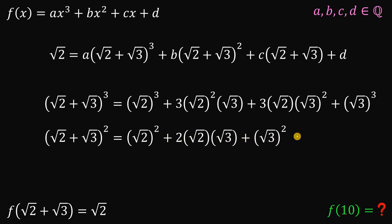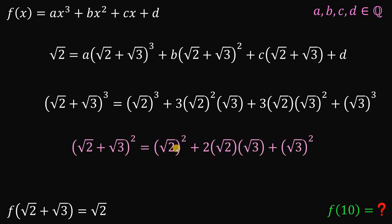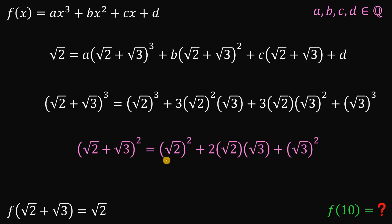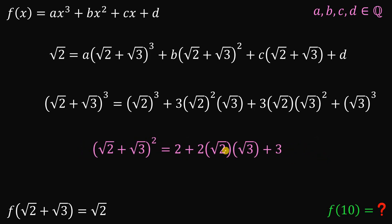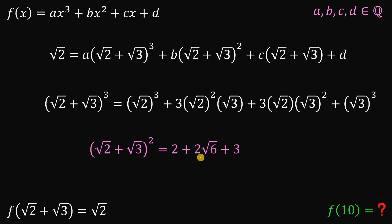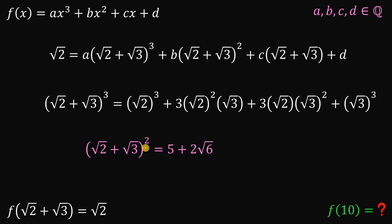Let's focus on the squared term and simplify. Square root of 2 squared is 2, and square root of 3 squared is 3. Then 2 times square root of 2 times square root of 3 is just 2 times square root of 6. Combining like terms, 2 plus 3 is 5. So square root of 2 plus square root of 3 raised to the power of 2 is equivalent to 5 plus 2 times square root of 6.